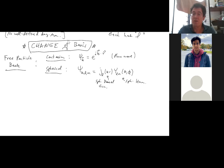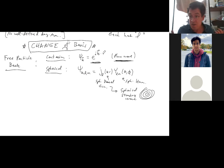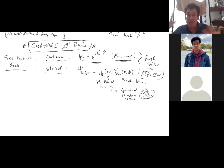These two functions — the plane wave and the spherical Bessel function — could not be more different, and yet they are both eigenstates, both solutions to H-psi equals E-psi. The spherical Bessel function is a spherical standing wave, in the same sense that e^(ik·r) is a plane wave. That is actually very important for today's discussion.